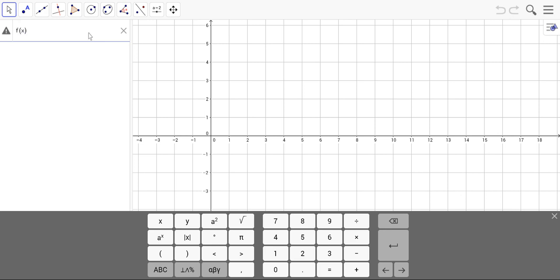I will type in my function again, f of x equals 0.5 x cubed. As with Desmos, you can type it in directly like I just did.